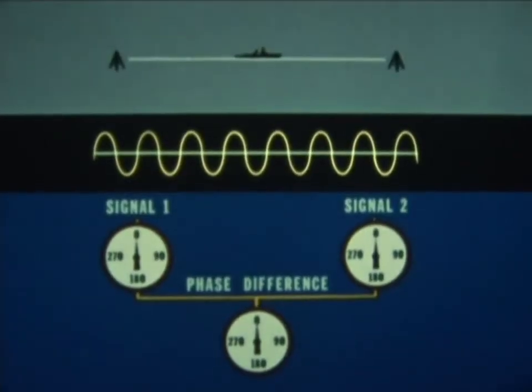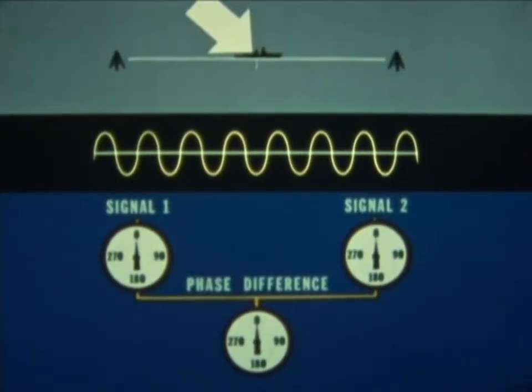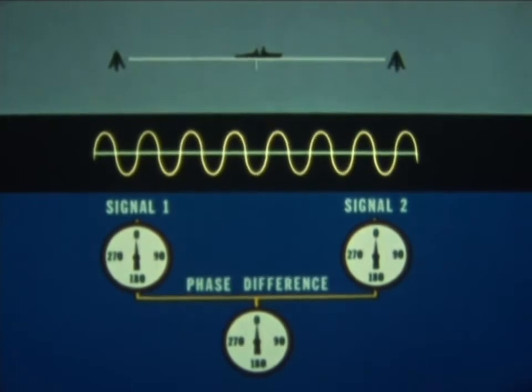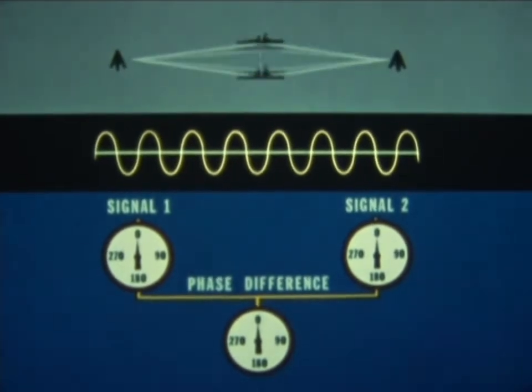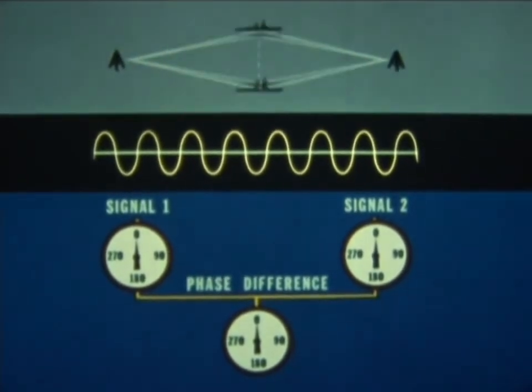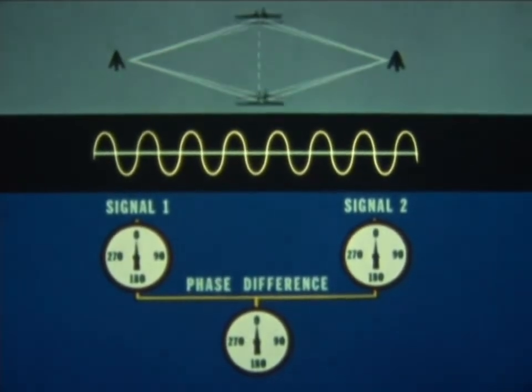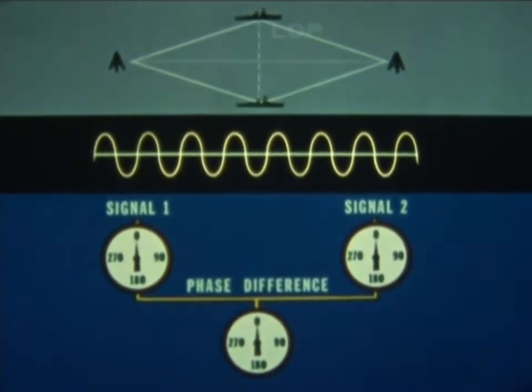Now, let's visualize the relationship between a receiver and two stations, with a baseline drawn between the two stations. At a point midway between the stations, there's no phase difference because the signals have traveled the same distance. And as long as the receiver remains on a line equidistant from both stations, the phase difference remains zero. This series of zero phase points establishes a line of position for the receiver.